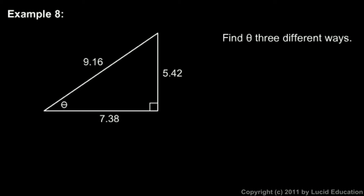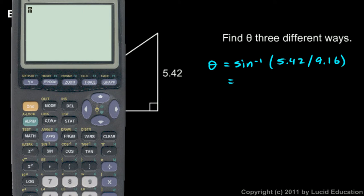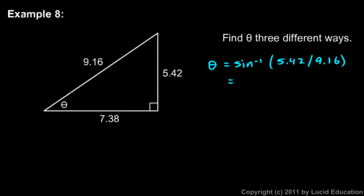Example 8 looks very similar. We're given a right triangle and an angle — in this case angle theta. And we're told to find theta three different ways, but it doesn't work out quite as nicely, and I'll explain why. Let's find theta with the inverse sine first. Sine of theta is opposite over hypotenuse, so the sine of theta will be 5.42 over 9.16. So theta will be the inverse sine of 5.42 divided by 9.16. On the calculator we get 36.27795564 degrees.